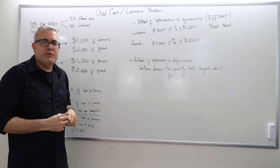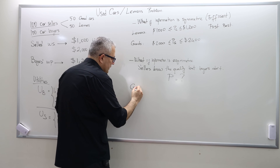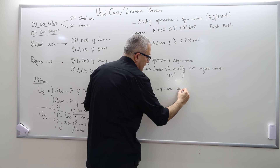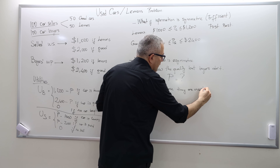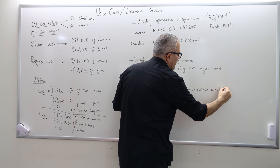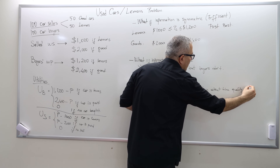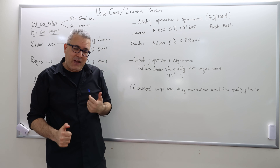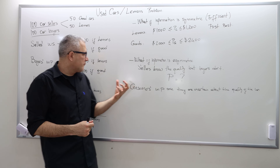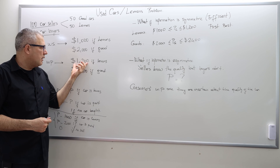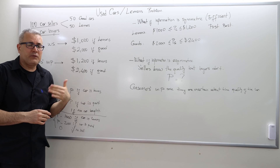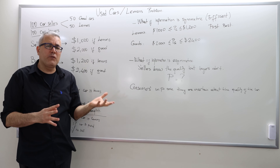Before answering this question, let's try to calculate what is the consumer's willingness to pay, since they are uncertain about the quality of the car. If you are a buyer, and since the information is asymmetric, you know that a good quality car is worth $2,400 for you, and the lemons are worth $1,200 for you. But the problem is half of the cars are lemons and half of the cars are good, and you don't know what type of car you're facing.